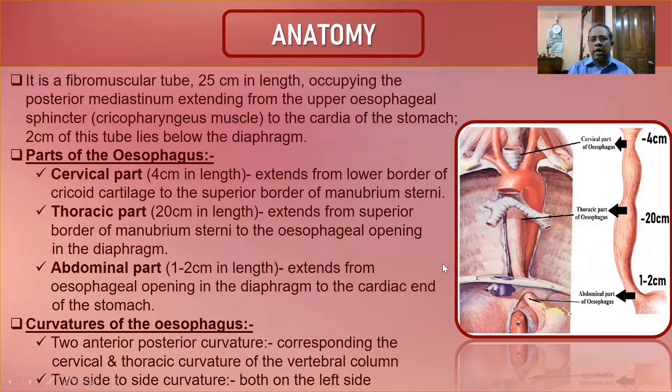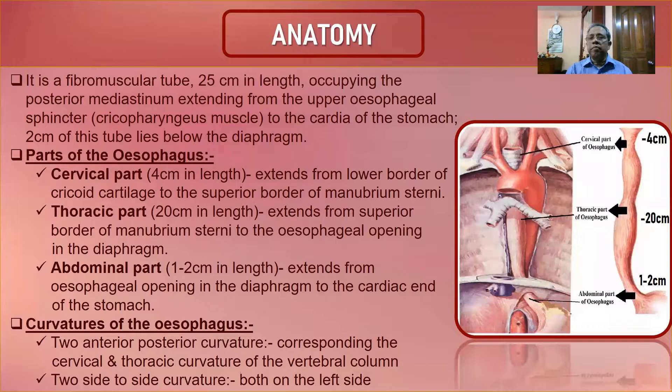During its course from neck to chest and abdomen, the esophagus has two anteroposterior curvatures corresponding to the thoracic and cervical vertebral column, and two lateral curvatures — both on the left side — occurring as it passes the trachea and the hiatus of the diaphragm.